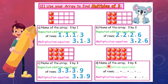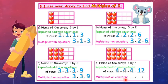Here we have the array 3 × 4 — it means 3 rows, each row has 4 apples. The repeated addition equation is 4 plus 4 plus 4 equals 12, so the multiplication equation is 3 × 4 equals 12. That means 3 groups, each group has 4 apples.